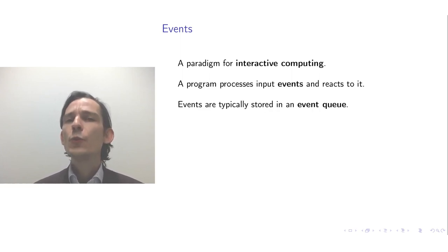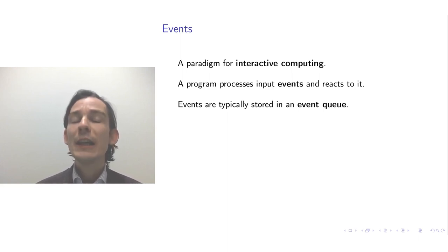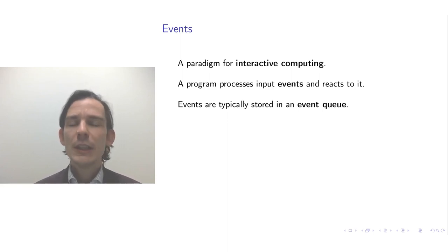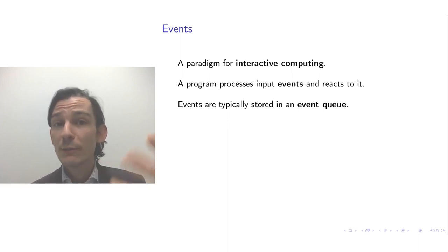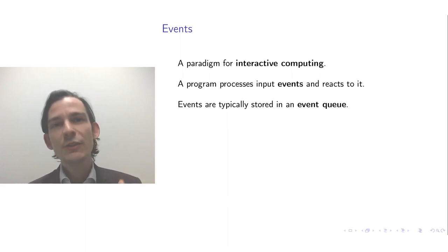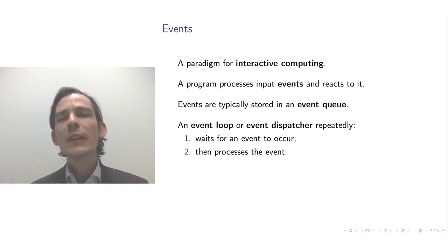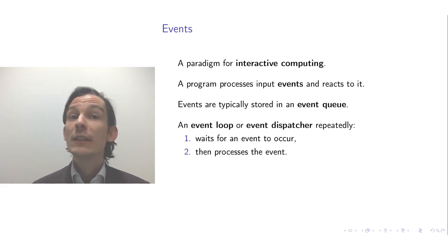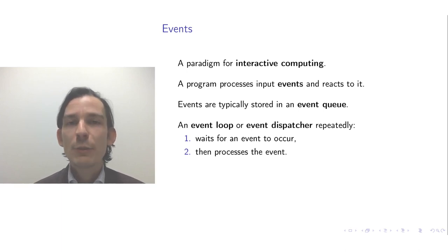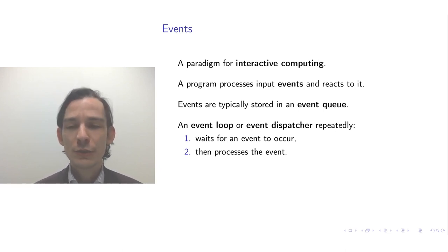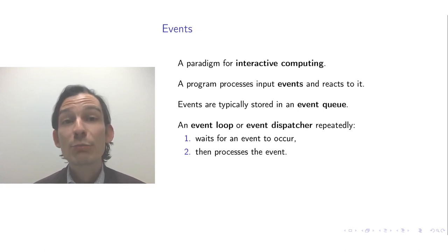You can think of those events as objects, and those events can occur at any point while your program is executing. Typically, the events that are being generated — whether caused by some user externally — are put on a queue of events that still have to be processed. There is something called an event loop or event dispatcher, a piece of the program that repeatedly waits for an event to occur. Sometimes no event at all occurs, so it waits for the first event and then starts processing it.